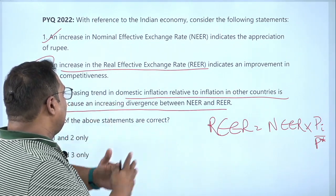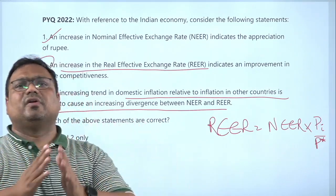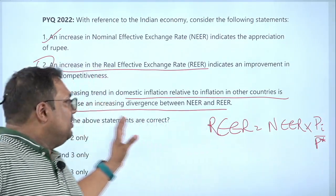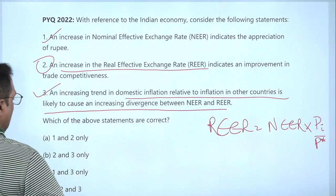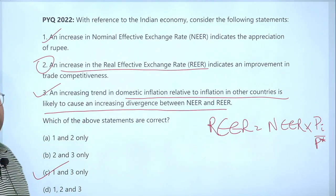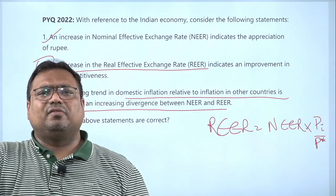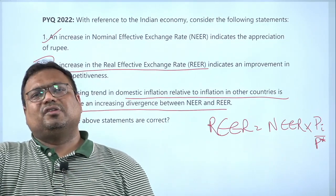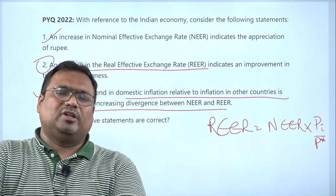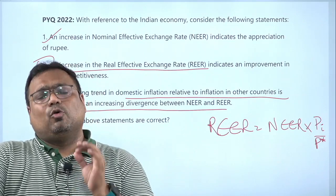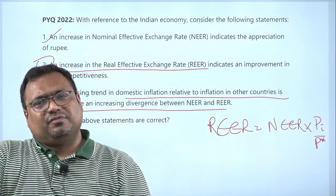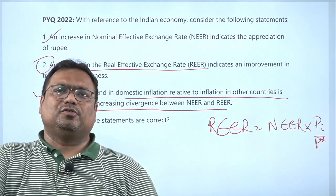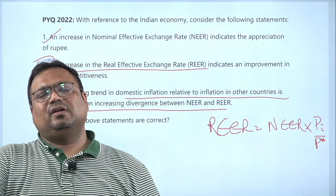If relative inflation is the same, NEER and REER will converge or be equal. So the answer is C — statements one and three are correct. With this, we have completed further discussion on REER and NEER. I hope this has cleared all your doubts. If there is any doubt, please post your question in the comments and I will answer that. Kindly share and comment on these videos as it improves the reach and awareness of the channel. Thank you.